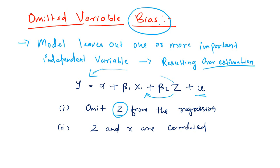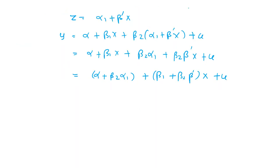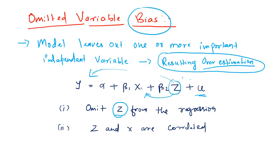We will get some sort of bias in the linear regression because of this omission of the important variable z. This will result in what is known as overestimation. The estimates that you will get will not be correct — they will be biased estimates and you cannot explain them properly. Let us try to understand this particular bias and why omitting z from this linear regression is going to cause bias.